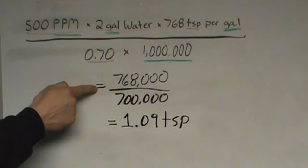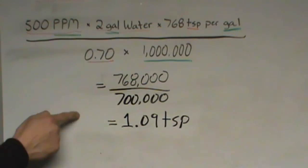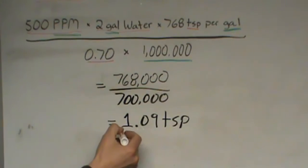We get 768,000 over 700,000 with the end result being 1.09 teaspoons. And if we reference what the EPA specified, they dictated one heaping teaspoon or slightly more than one teaspoon. So our mathematical equation is correct. Our answer is correct. So now we have a basic understanding of the mathematics behind the calculations of how to make our chlorine solution specifically 500 milligrams per liter. So we can alter this to suit our needs.